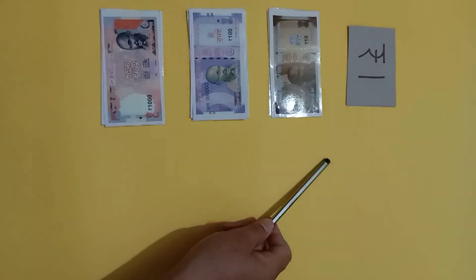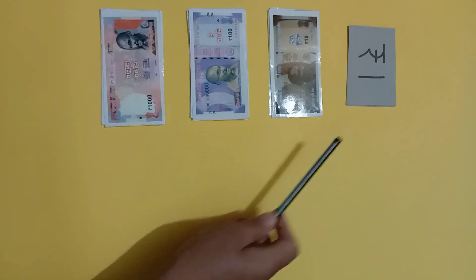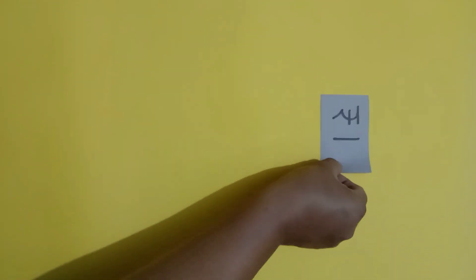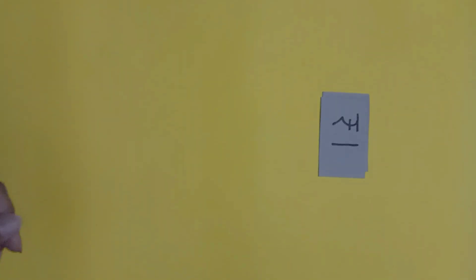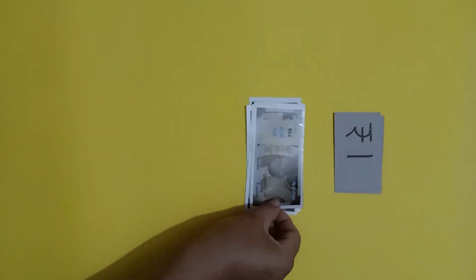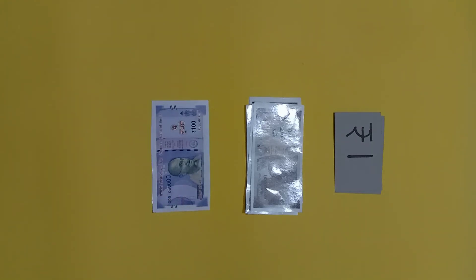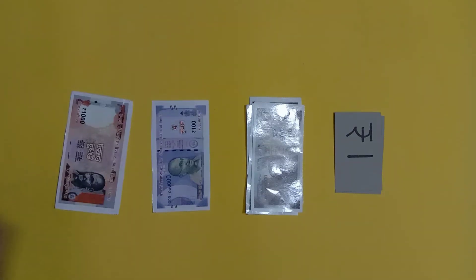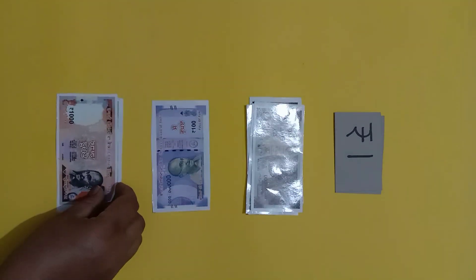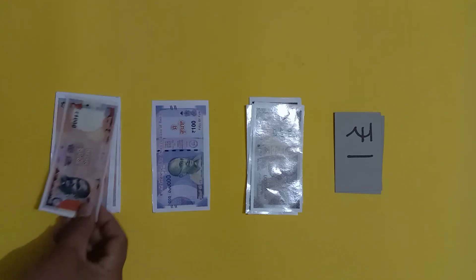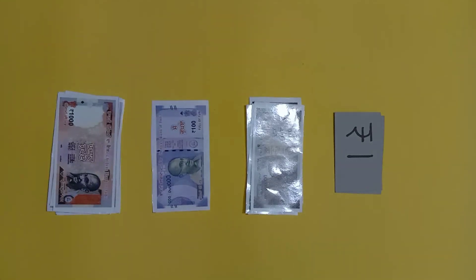Now we will take different notes of different value and see the value of these notes. Firstly, we will take two notes of rupees one, equal to rupees two. Then we will take four notes of rupees ten — ten, twenty, thirty and forty — equal to rupees forty. We will take one note of rupees hundred, equal to rupees hundred. Then we will take five notes of rupees one thousand — one thousand, two thousand, three thousand, four thousand and five thousand — equal to rupees five thousand.